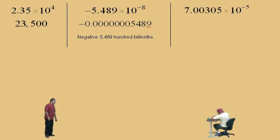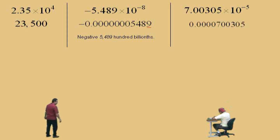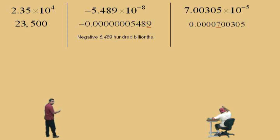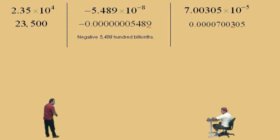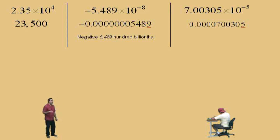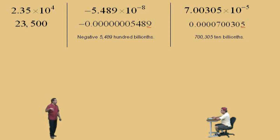Let's do another one: 7.00305 times 10 to the negative 5. The decimal moves to the left 5 times. How do we read this in English? Ones, tenths, hundredths; one-thousandths, ten-thousandths, hundred-thousandths; one-millionths, ten-millionths, hundred-millionths; one-billionths, ten-billionths. So that 5 is in the ten-billionths place, and this number is 700,305 ten-billionths.